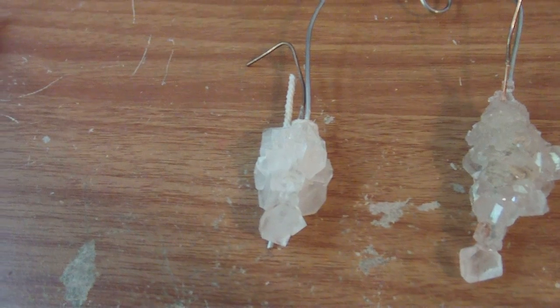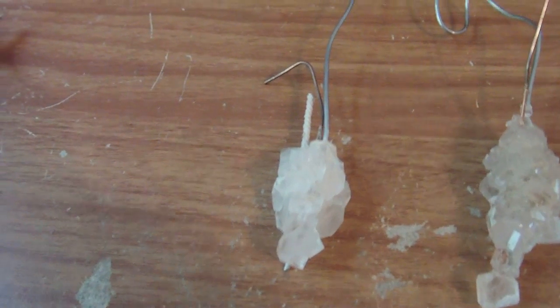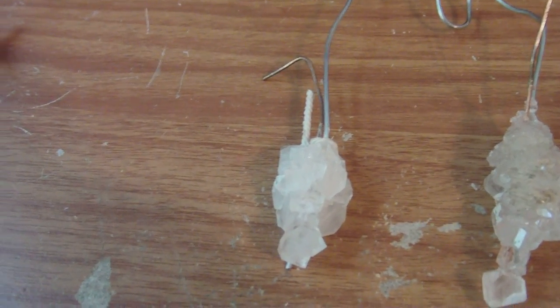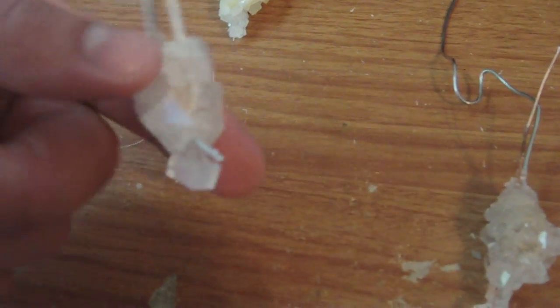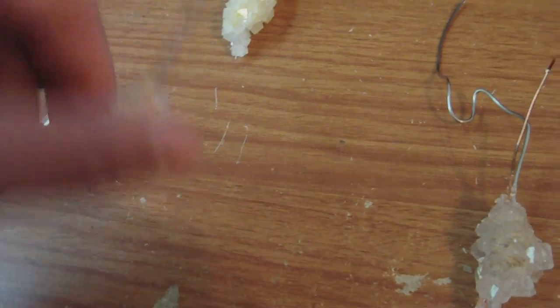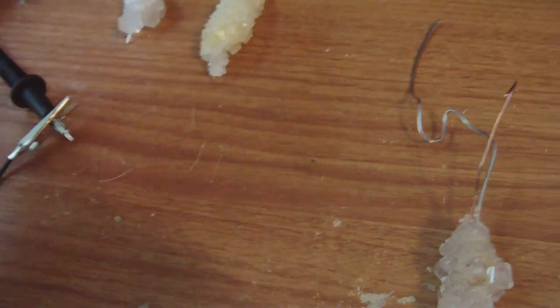This one right here in the middle was the control cell. This one produced about like I said about 200 millivolts. There's a borax crystal, let it grow. This is just a control, just to see what happens.